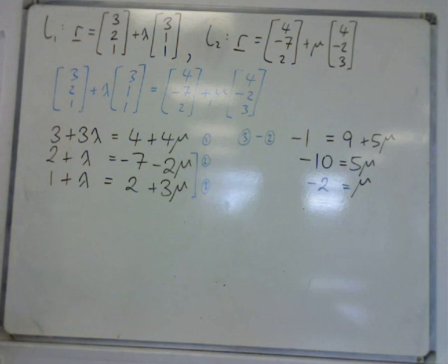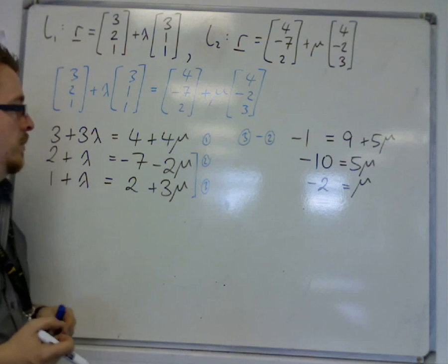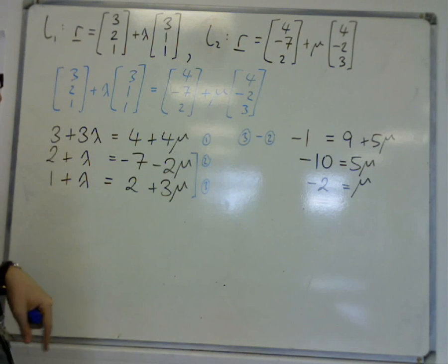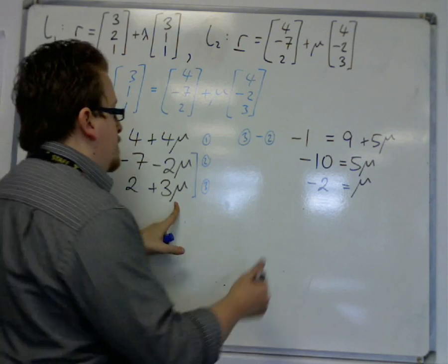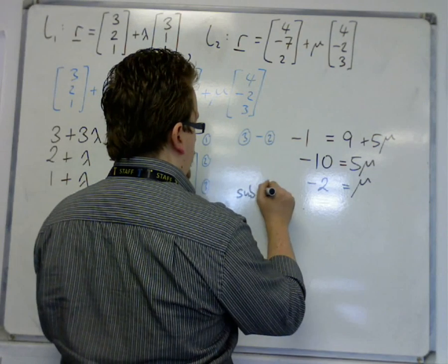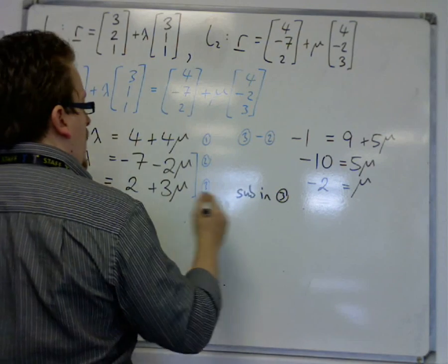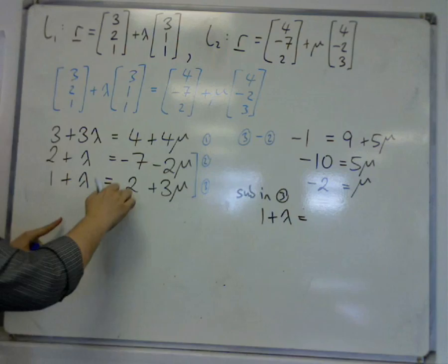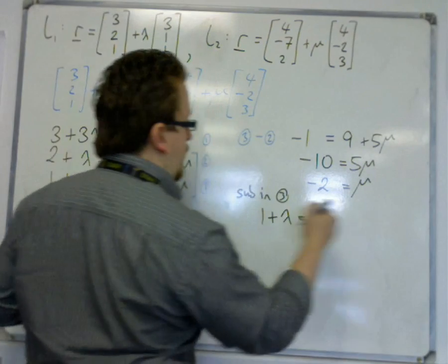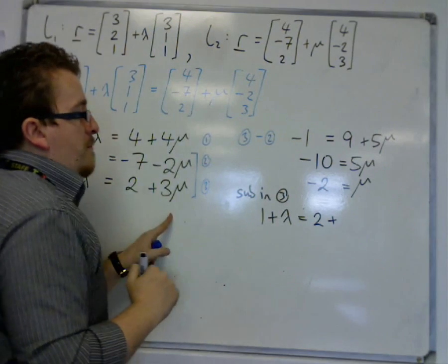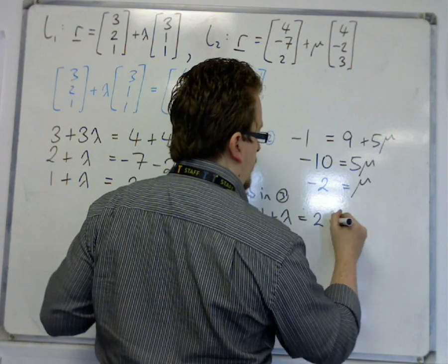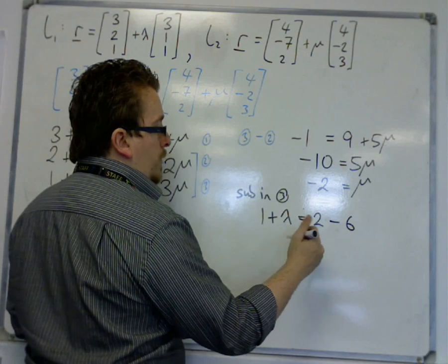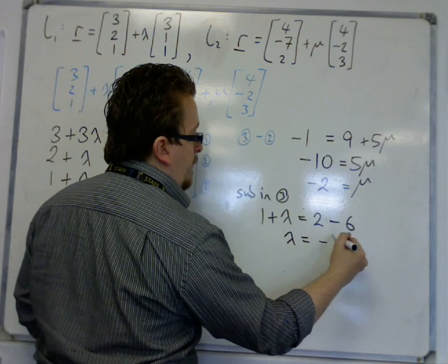Now if you substitute that into one of the two equations that we are working with, let's say I substitute it into equation 3. So we get 1 plus lambda is equal to 2 plus 3 lots of mu, so 3 lots of minus 2, that's minus 6. So I have 2 take away 6 is minus 4, take 1 from both sides is minus 5, so lambda is minus 5.